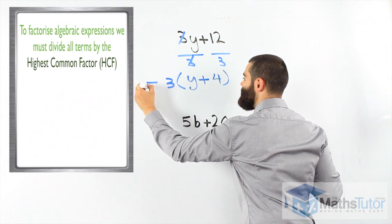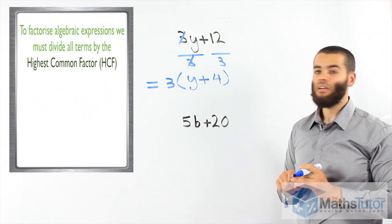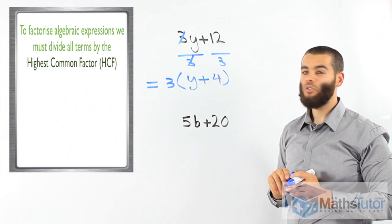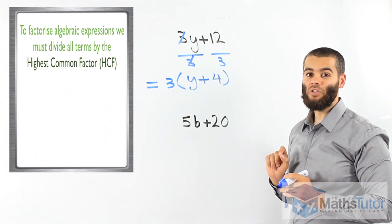3 divided by 3 is gone. We're left with y and we know the plus is there. 12 divided by 3 is 4. So, our answer is 3, open bracket, y plus 4, close bracket.